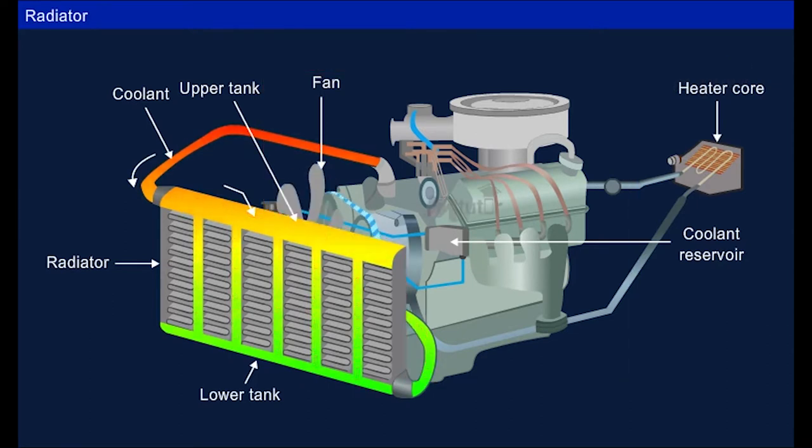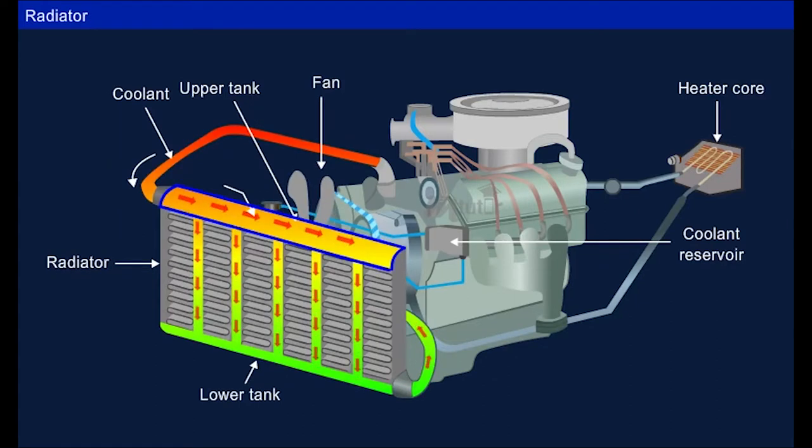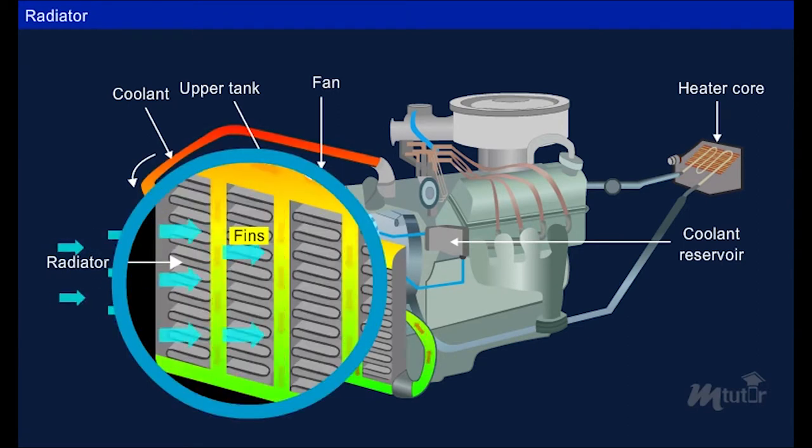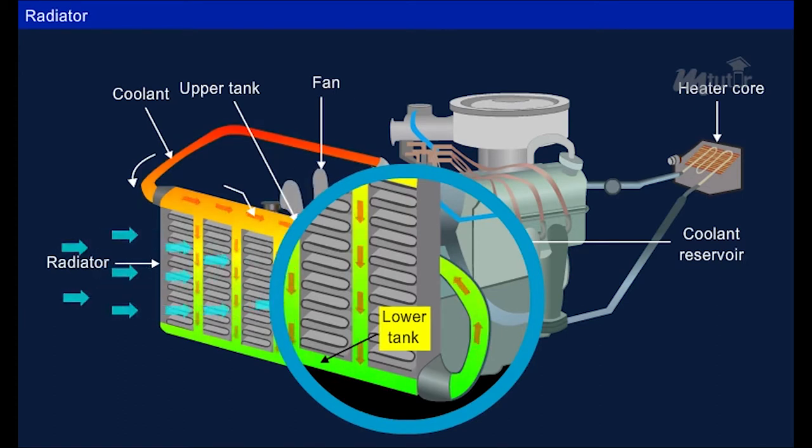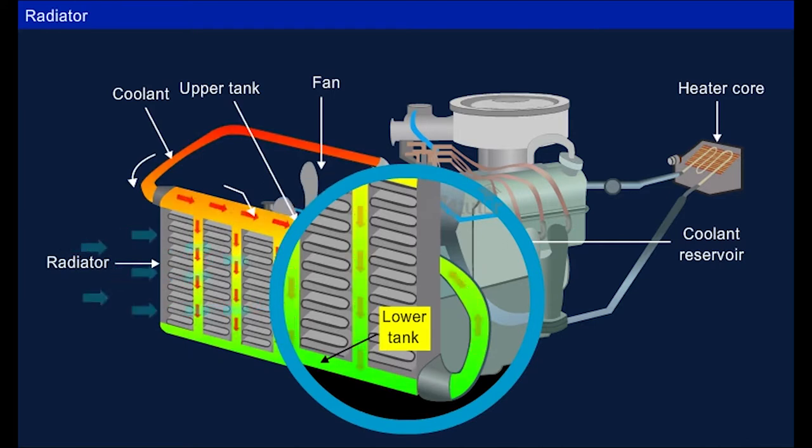The coolant picks up heat from the engine and flows from the upper tank to the lower tank of the radiator. Atmospheric air passes over the fins of the radiator and picks up the heat from the hot coolant. When the coolant reaches the lower tank of the radiator, the temperature reduces considerably. This cold coolant is circulated back around the engine cylinder and the cycle is repeated.